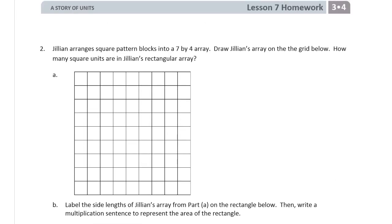Jillian arranges square pattern blocks into a 7 by 4 array. 7 by 4 array. Now this grid is a lot bigger than 7 by 4. Draw Jillian's array on the grid below. Alright. How many square units are in Jillian's rectangular array? So it's a 7 by 4 array. So that means we have 1, 2, 3, 4, 5, 6, 7 is one side length. And then 1, 2, 3, 4 is the other.